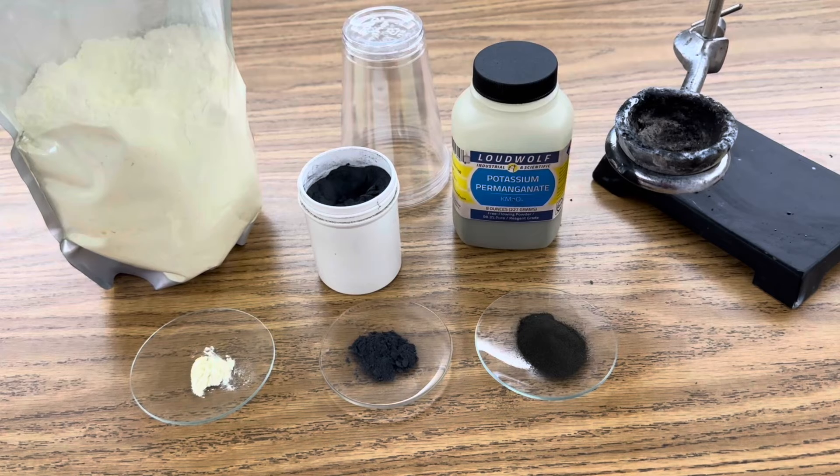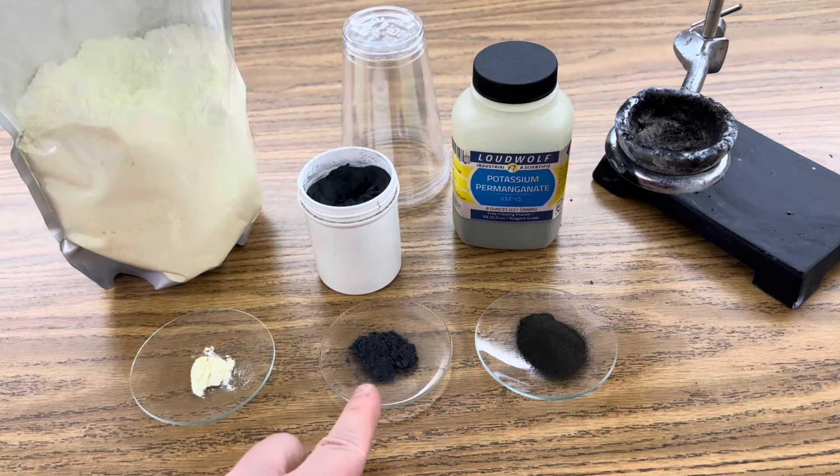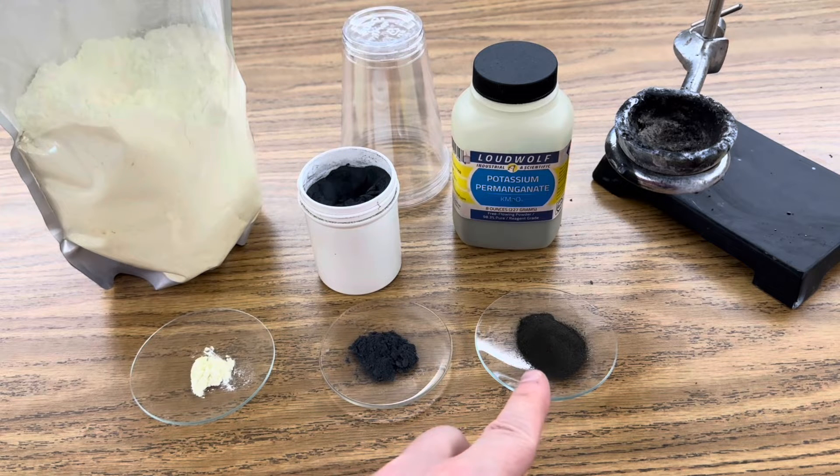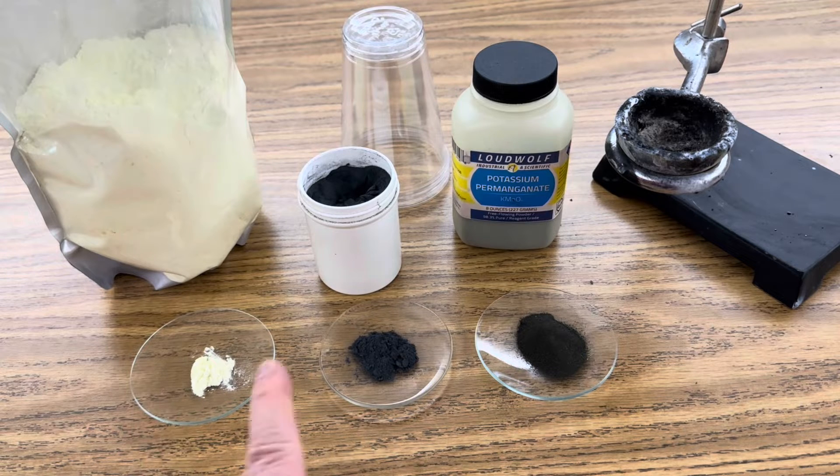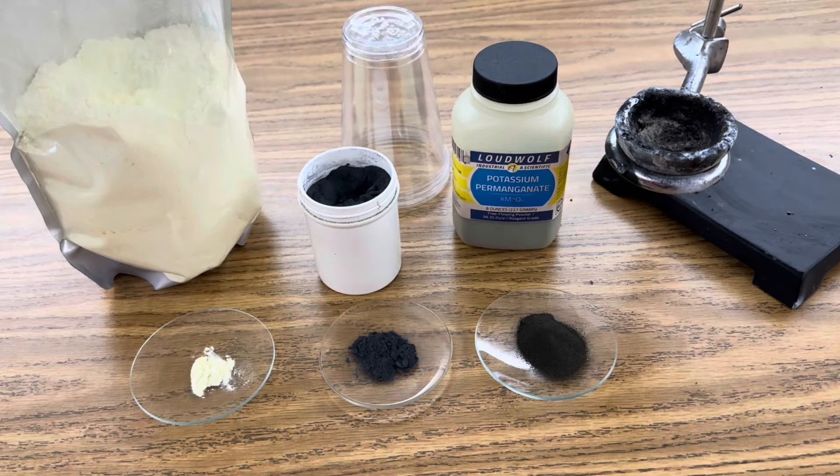All I'm using in this investigation is 10 milligrams of sulfur, 20 milligrams of magnesium, and 30 milligrams of potassium permanganate. So it's one part sulfur, two parts magnesium, three parts potassium permanganate.